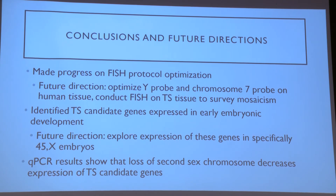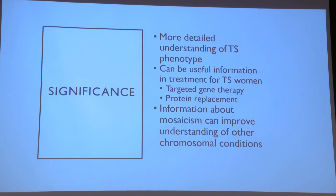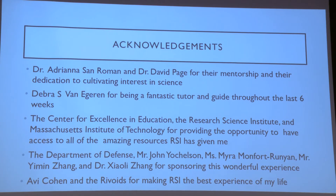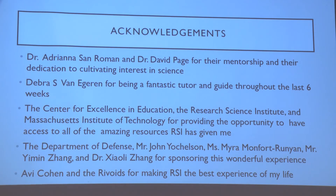In conclusions, we were able to make progress on the FISH protocol through the X probe, but we need more work on the Y probe and chromosome 7 probe to survey mosaicism. We were able to identify TS candidate genes and look at their expression, and we want to do that in more Turner Syndrome samples in the future. We also used qPCR to compare relative expression. Surveying mosaicism is critical to understanding the TS phenotype, which is still pretty mysterious. Now that we've found actual gene expression data, we can target gene therapy and maybe look at protein replacement. Some of the information can also be valuable for other chromosomal conditions.